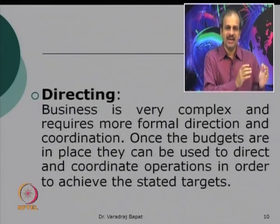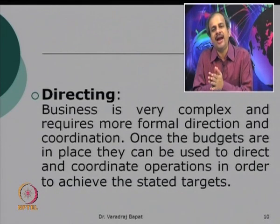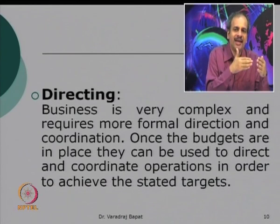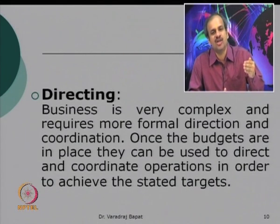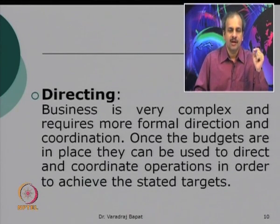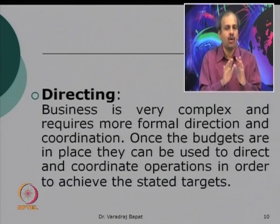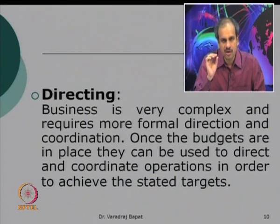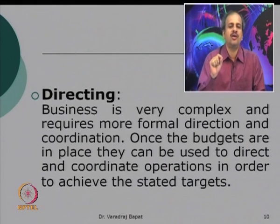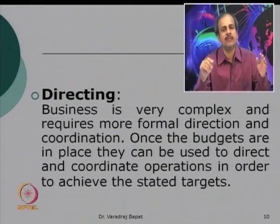The next objective is directing. When the budget is done, the objective of planning is achieved. When you actually implement, you are able to direct activities properly because you have a goal and you can move toward it. If there is any deviation, you can reset your activities or change the goal if necessary. Business is very complex and requires more formal direction and coordination. Once budgets are in place, they can be used to direct and coordinate operations to achieve the target, properly channelizing all efforts and energies.